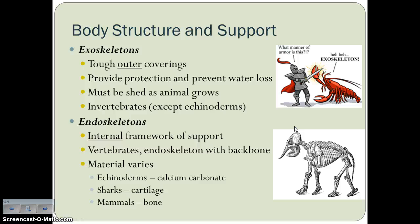Echinoderms are invertebrates that have a calcium carbonate endoskeleton. An endoskeleton is an internal framework of support. In vertebrates, that's an endoskeleton with a backbone. That endoskeleton can be made of different materials — echinoderms have calcium carbonate, sharks have cartilage as their endoskeletons, and then mammals, of course, have bone.